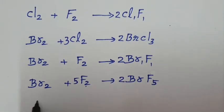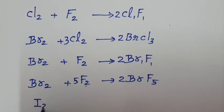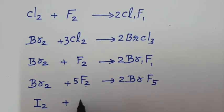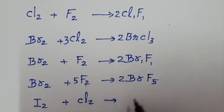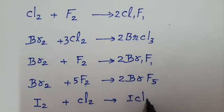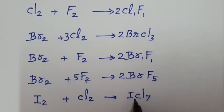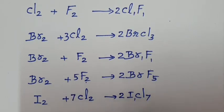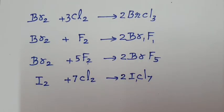If iodine is the first halogen, it is the least electronegative; it combines with chlorine, bromine, and fluorine. For example, if it combines with chlorine it forms ICl7 — iodine valency 7, chlorine valency 1.